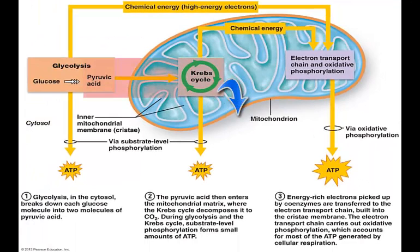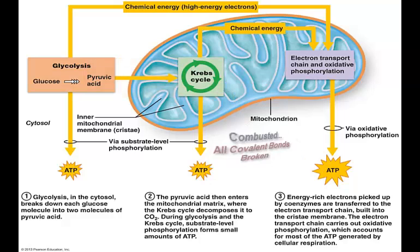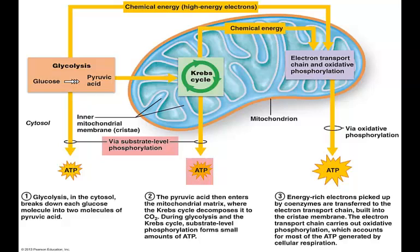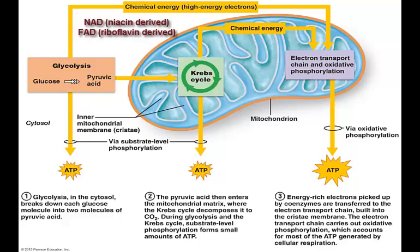Pyruvate comes into the Krebs cycle and what leaves is carbon dioxide — the pyruvate is completely combusted. In the process of combusting pyruvate to carbon dioxide, the Krebs cycle generates ATP again via substrate-level phosphorylation. It also generates high-energy electrons carried as hydrogen ions, which are transported to another site within the mitochondria using the carrier molecules NAD and FAD.